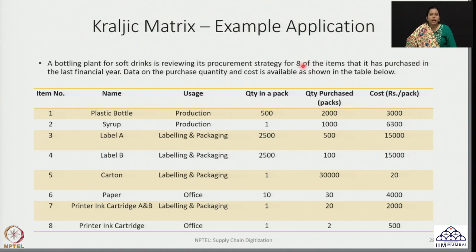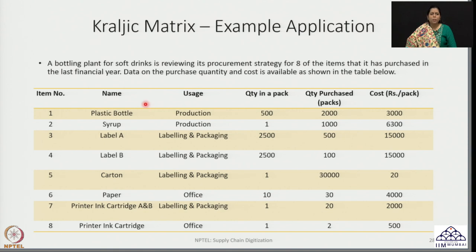These are typical products procured and consumed by processes at the bottling plant, and they are only representative. For example, if this is a fizzy drink, gases may need to be pumped into the product, flavors may need to be added, and there could be other office consumables such as stationery. Hence, this is only a representative example of what could be procured.